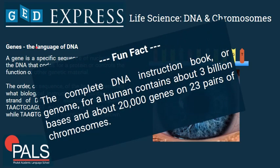Some fun facts about DNA: the complete DNA instruction book in a single cell — the human genome — contains about 3 billion bases (that's a 3 with 9 zeros), which equals about 20,000 genes, and these sit on 23 pairs of chromosomes. So we now know what DNA is, what nucleotides are, what DNA is made of, and what genes are — but we still don't know what chromosomes are, which comes next.